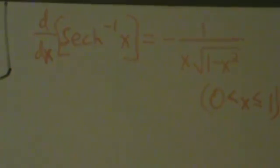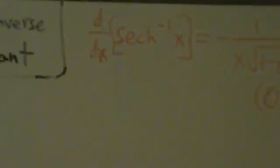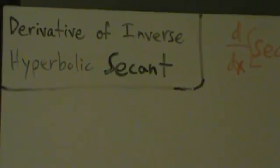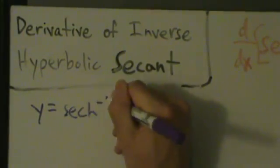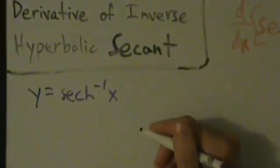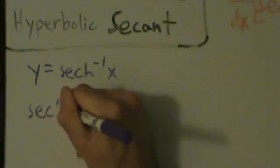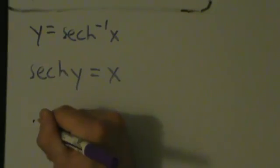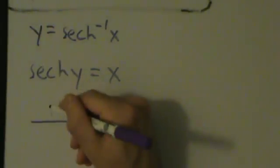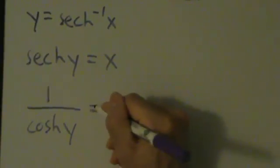So let's see where this derivative formula comes from. We're going to do it the same way we did the derivative of inverse hyperbolic cotangent. So we say y equals inverse hyperbolic secant of x, which means hyperbolic secant of y equals x. But remember, hyperbolic secant is just 1 divided by the hyperbolic cosine, so hyperbolic secant of y is 1 over cosh of y, and that still equals x.